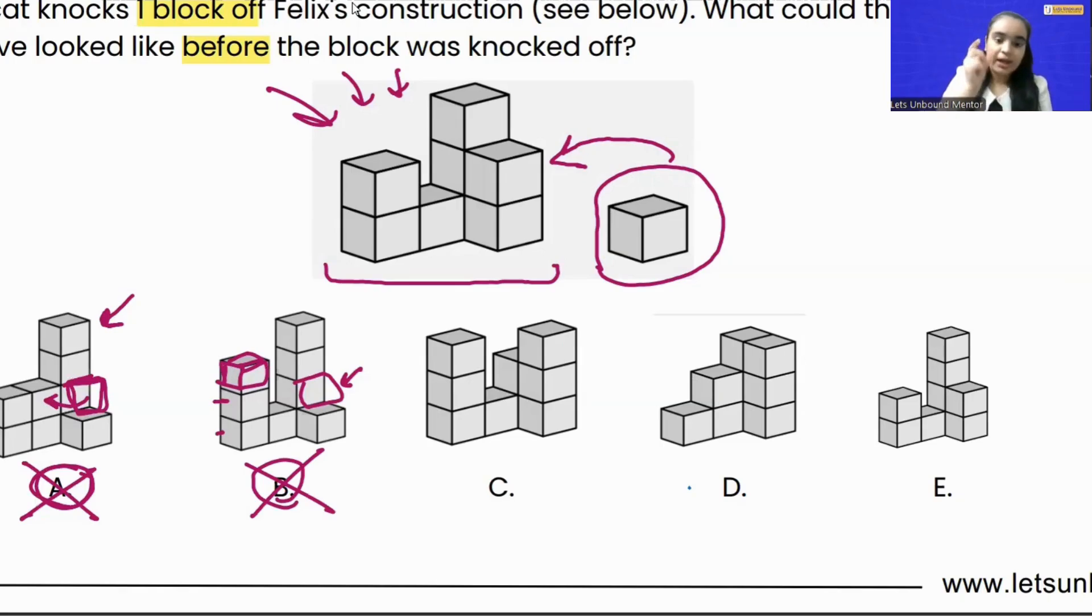Let's see option C. Now in option C, if you look carefully, here we were having only two blocks in the very first position. But here we can see that there are three blocks, which means we can assume that this block has been kept over here.